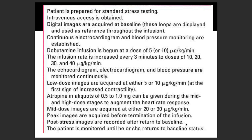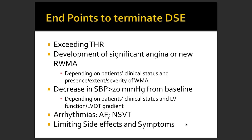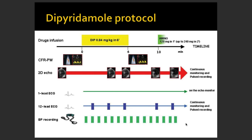Mid-dose images can be acquired at 20 to 30 micrograms per minute. After returning to baseline, you acquire those images and must continue monitoring the patient until they return to baseline. You must stop the test earlier if the target heart rate is exceeded, if the patient has significant angina, new regional wall motion abnormality, a drop in systolic blood pressure of more than 20 mmHg from baseline, or development of serious arrhythmias such as AF or non-sustained ventricular tachycardia.